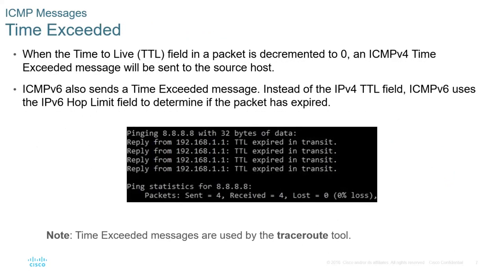Time Exceeded: When the Time to Live field in a packet is decremented to 0, an ICMPv4 Time Exceeded message will be sent to the source host. ICMPv6 also sends a Time Exceeded message, but uses the IPv6 HopLimit field instead of the IPv4 TTL field to determine if the packet has expired. It's the same functionality, just a different name. Time Exceeded messages are used by the TraceRoute tool.